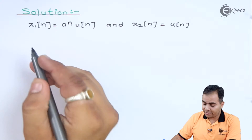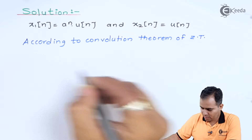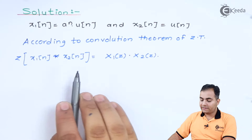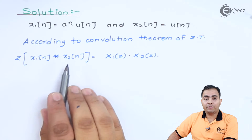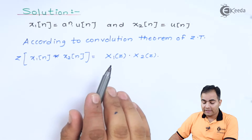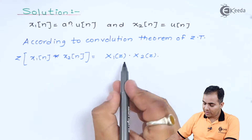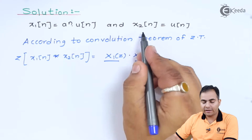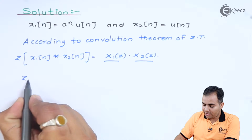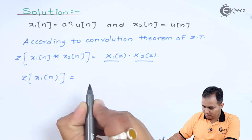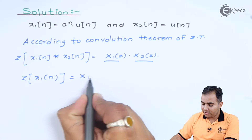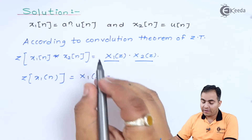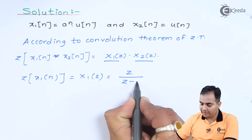According to the convolution theorem of Z-transform, the convolution of x1(n) and x2(n) is nothing but the product X1(z) · X2(z). The convolution of any discrete function converted into the Z-domain is the product of the Z-transforms of individual functions. Now, applying Z-transform to x1(n): X1(z) = z / (z − a), using the time-scaling property.